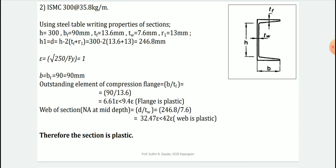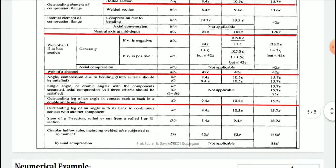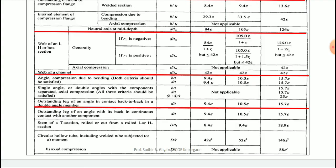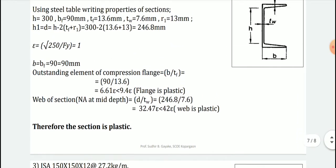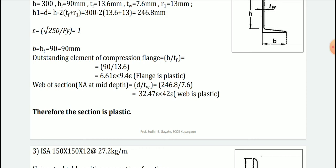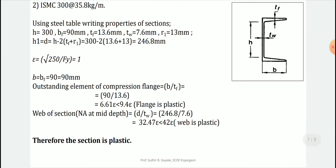For the web of the channel section with neutral axis at mid-depth, d/TW = 246.8/7.6 = 32.47 epsilon. From Table 2, the limit for web of a channel section is 42 epsilon. Since 32.47 is less than 42 epsilon, the web is also plastic. Both flange and web are plastic, therefore ISMC 300 at 35.8 kg/m is classified as a plastic section.